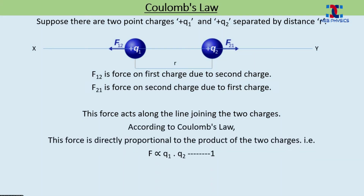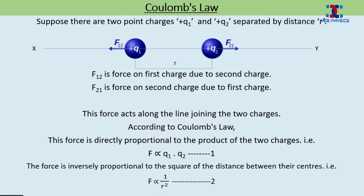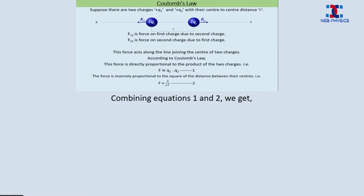Now, according to Coulomb's Law, the force is directly proportional to the product of the two charges, and that can be written as F proportional to q1 times q2. Let it be equation 1. Coulomb's Law also tells that the force is inversely proportional to the square of the distance between the charges, and that can be written as F proportional to 1 by R square. Let it be equation 2. Now, if we combine equation 1 and 2, we get F proportional to q1 times q2 by R square. Let it be equation 3.